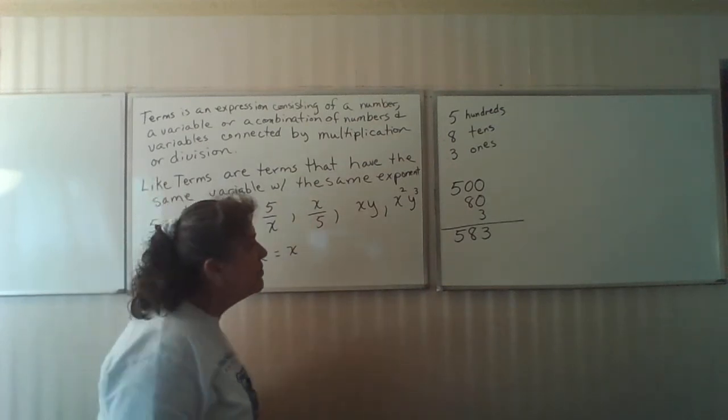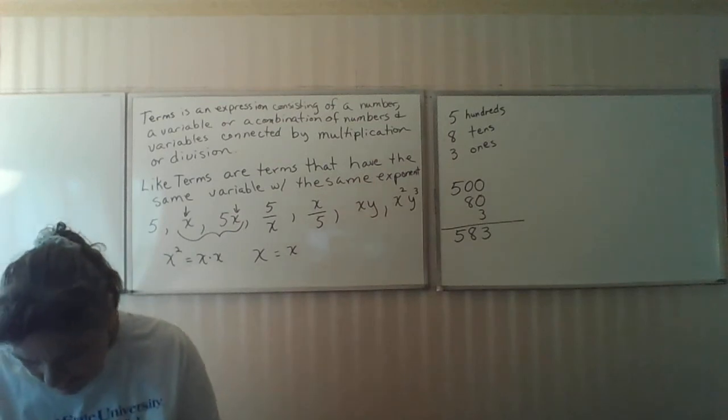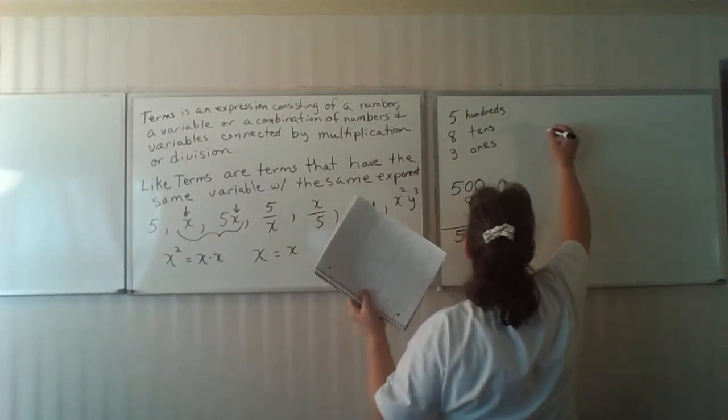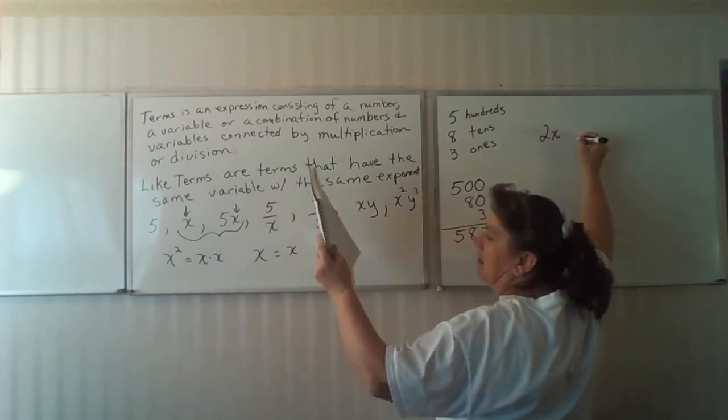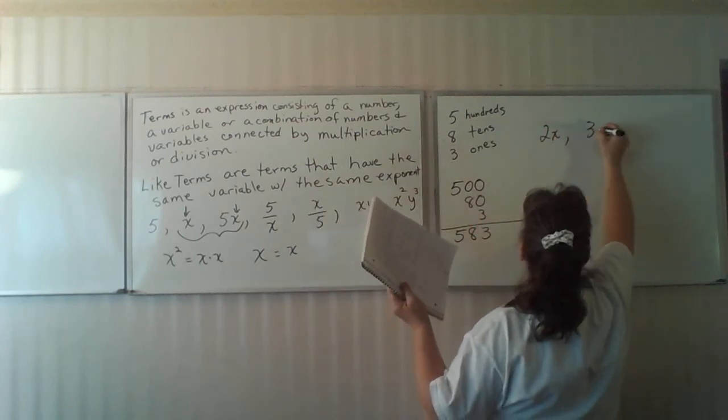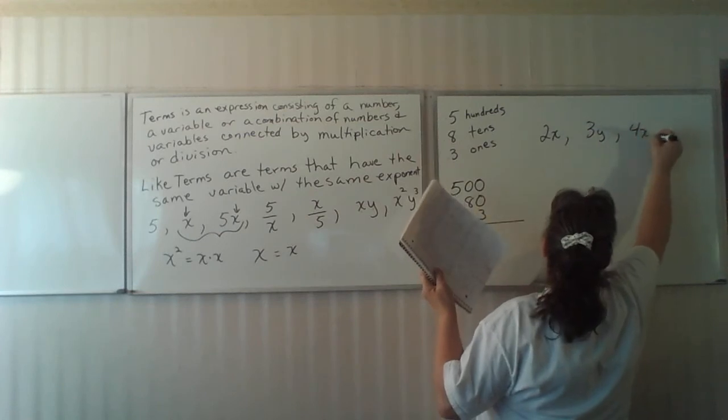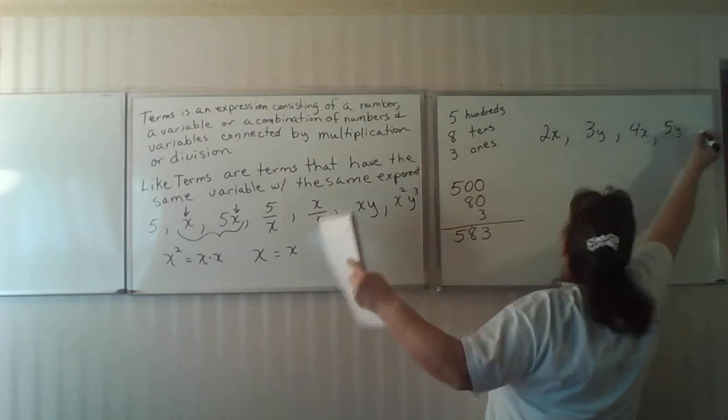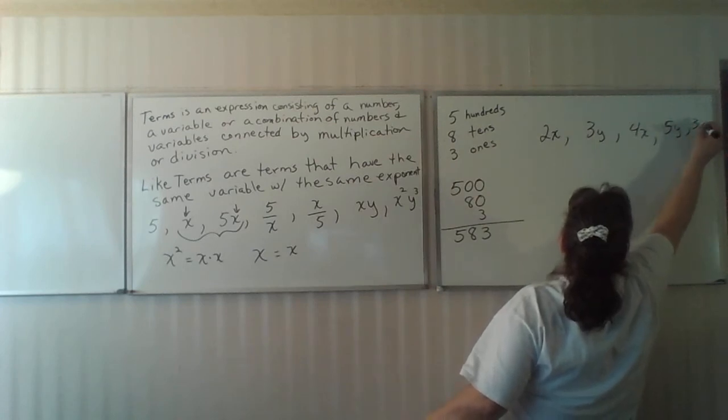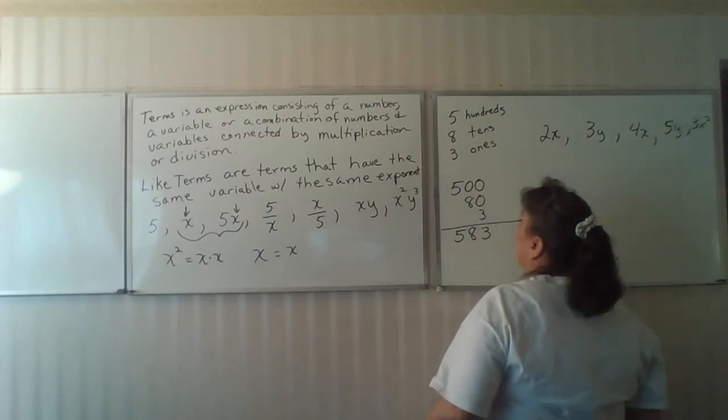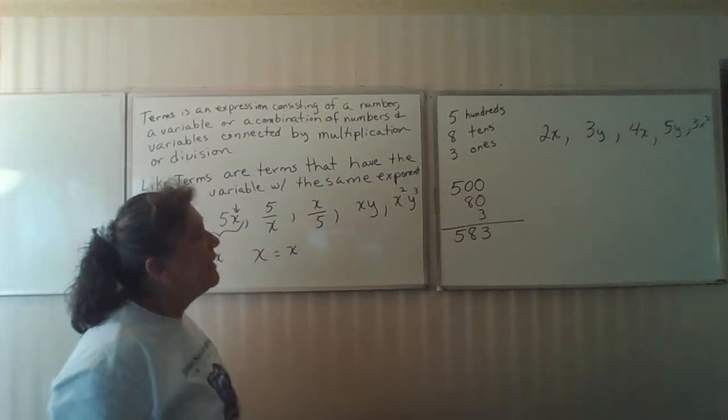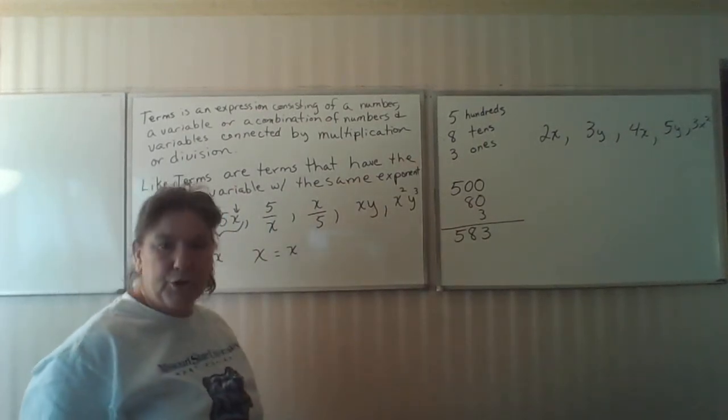So let's look at some things that might possibly be like terms. So let's see if we can identify them. 2x, 3y, 4x, 5y, and 3x squared. What is like terms in this series of terms?